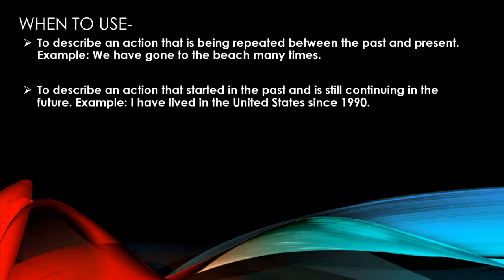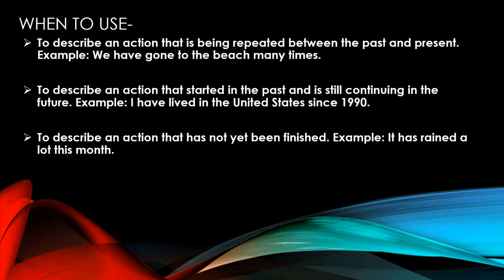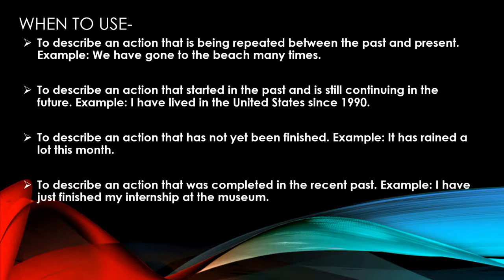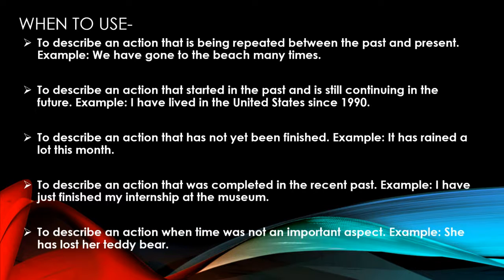Third, to describe an action that has not yet been finished. Example: 'It has rained a lot this month.' Fourth, to describe an action that was completed in the recent past. Example: 'I have just finished my internship at the museum.' That means the action just completed and its result is visible. Lastly, to describe an action when time was not an important aspect. Example: 'She has lost her teddy bear.' These are the situations where we need to use present perfect tense.